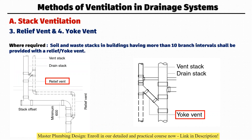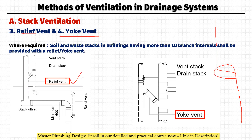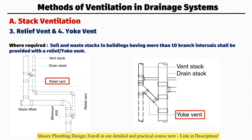Relief and yoke vents are basically used for high-rise buildings, specifically where there are high pressure zones. For example, where water comes from a high floor and takes an offset going down, that creates a high pressure zone — in that case you must provide a relief vent. For high-rise buildings, you provide both a relief vent and a yoke vent, with the yoke vent provided after every five branch intervals.